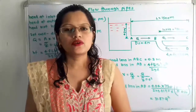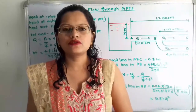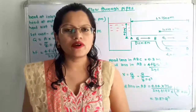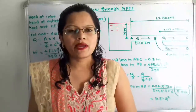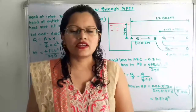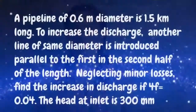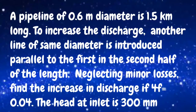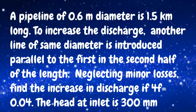Hello friends, this is Priyanka. Today we are going to solve a problem on flow through pipes. In this video we are going to find out what is the increase in discharge for a pipe when a parallel pipe is connected to a single pipe. The given problem: a pipeline of 0.6 meter diameter is 1.5 km long. To increase the discharge, another line of the same diameter is introduced parallel to the first in the second half of the length. Neglecting minor losses, find the increase in discharge if 4f equals 0.04 and the head at inlet is 300 millimeter.